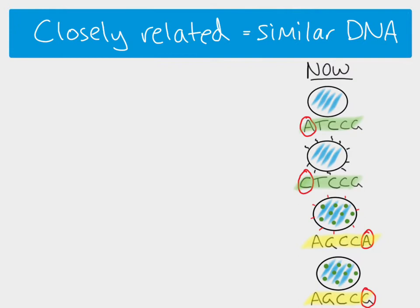But why can we say with certainty that if the DNA sequences are more similar, then the species are more closely related? We have to look at how these species have come about. We know that species evolve from pre-existing species, so if we were to go back through their evolutionary history, we could identify a common ancestor.